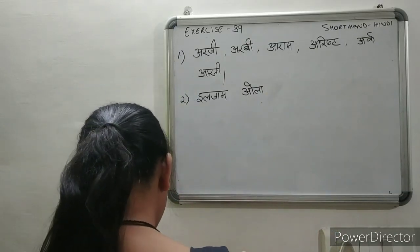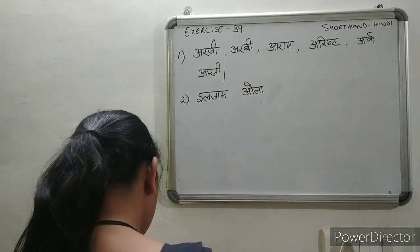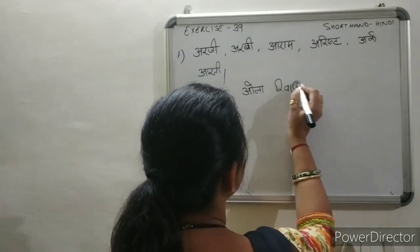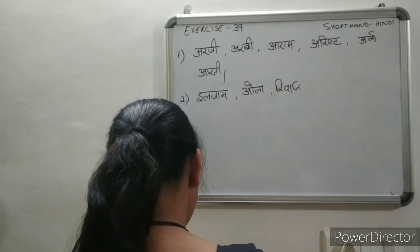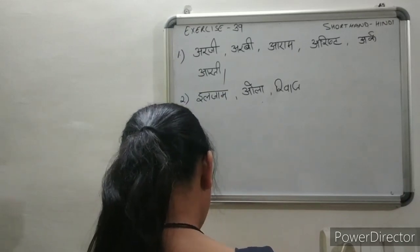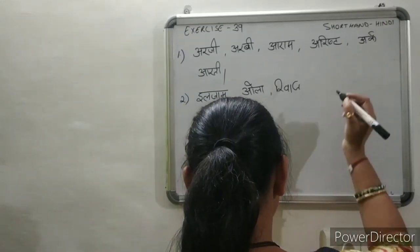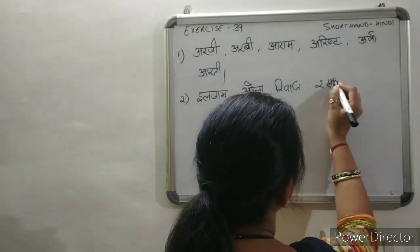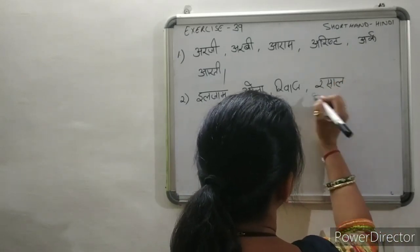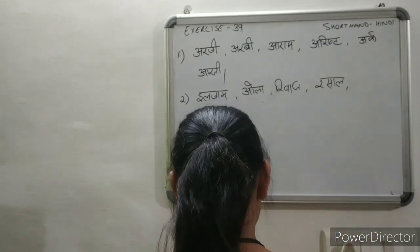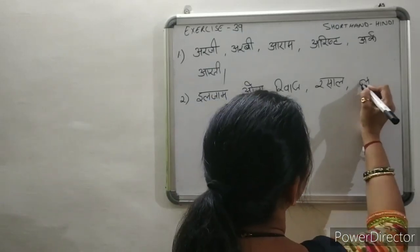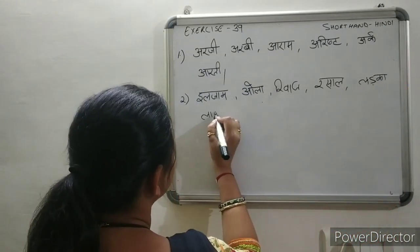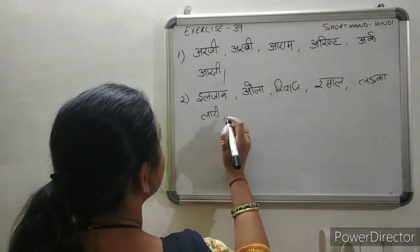After this, your word is Rivaaz. After Rivaaz, your next word is Rasaan. Then the word is Larka.